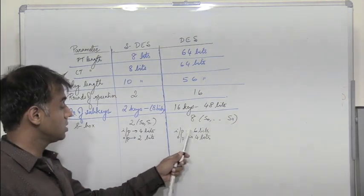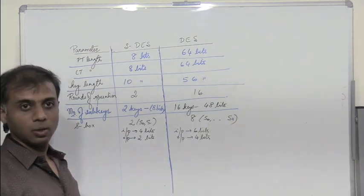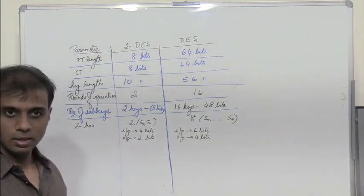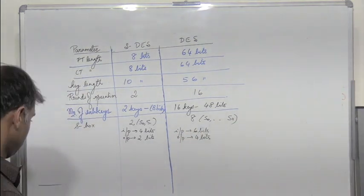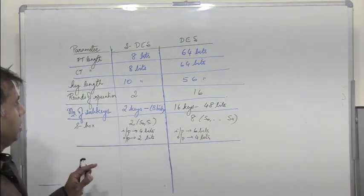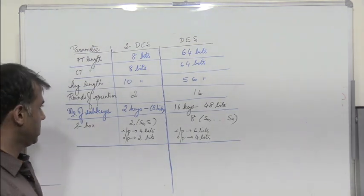In DES, bit 1 and 6 would indicate the row whereas bit 2, 3, 4, 5 would indicate the column. So these are some of the major differences between S-DES and DES.